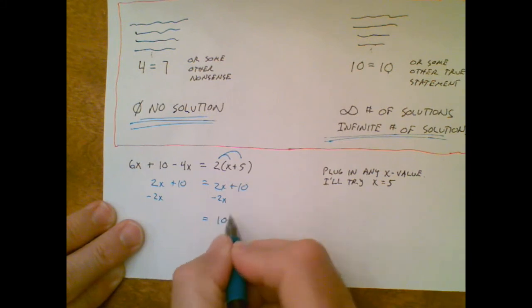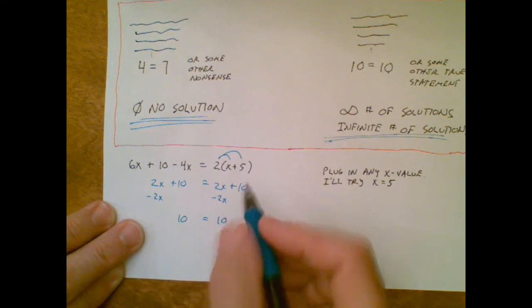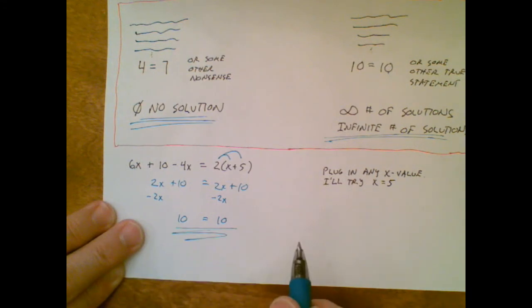And what I get on the right hand side is a 10. What I get on the left hand side is a 10. Aha, that seems weird, but it's not, because now we know if I end up with no variables remaining and a true statement, then I simply write infinite number of solutions.